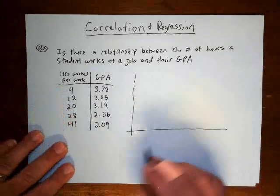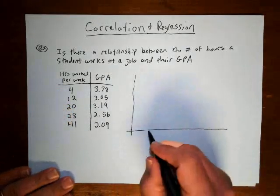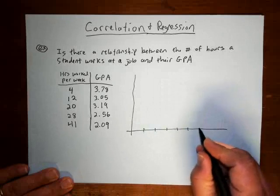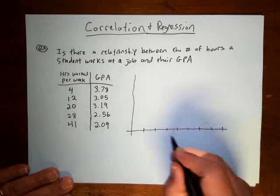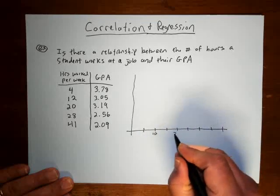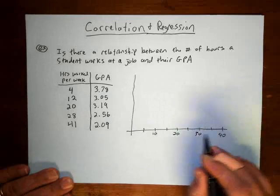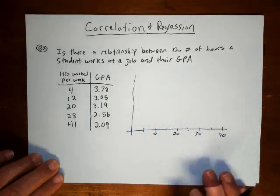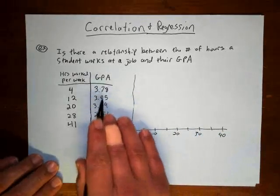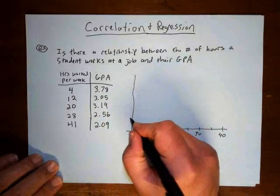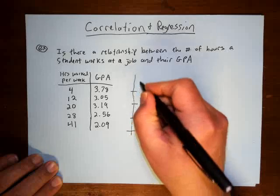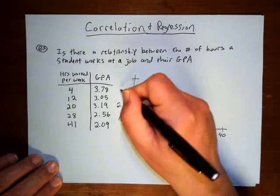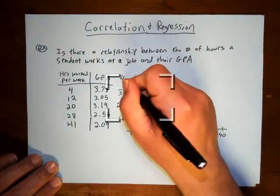The hours worked go up to 41, so a good scale would be to go up by 5: 5, 10, 15, 20, 25, 30, 35, 40 — or simply 10, 20, 30, 40. The grade point averages go up to 4, so we divide the vertical axis into 1.0, 2.0, 3.0, and 4.0.